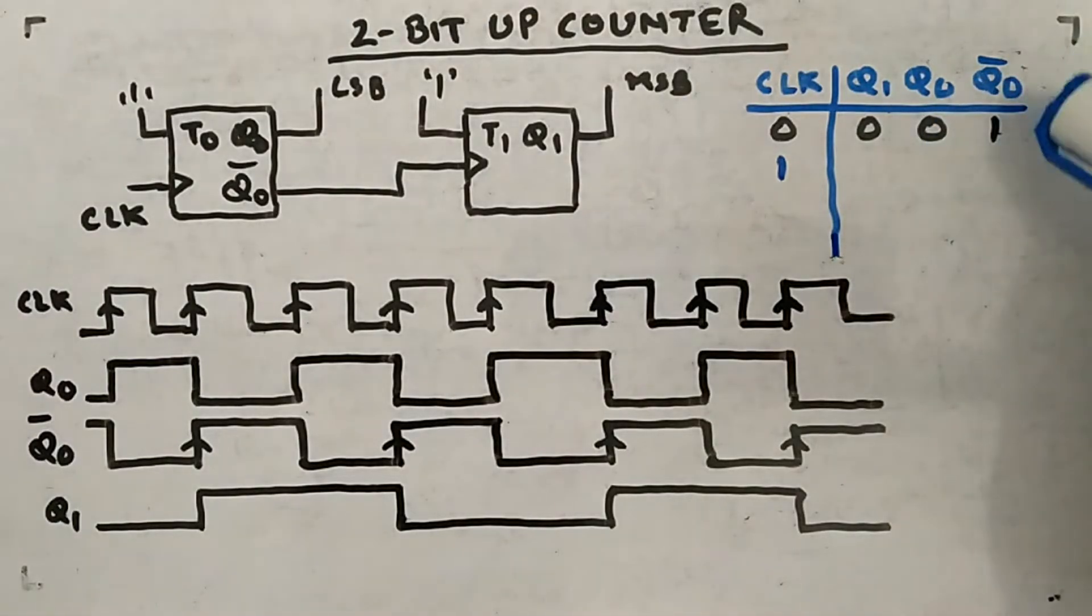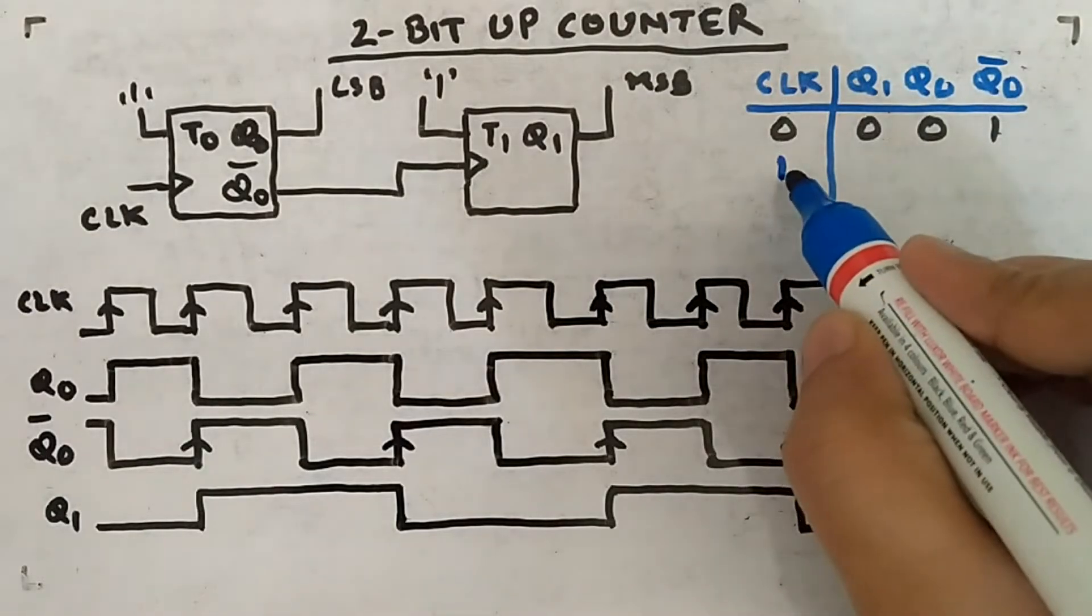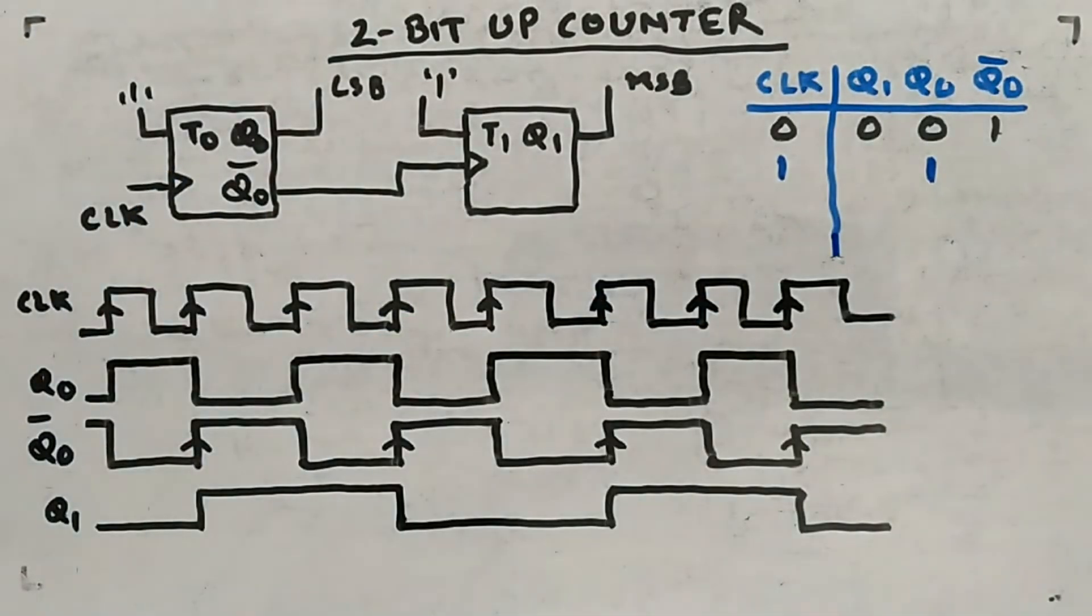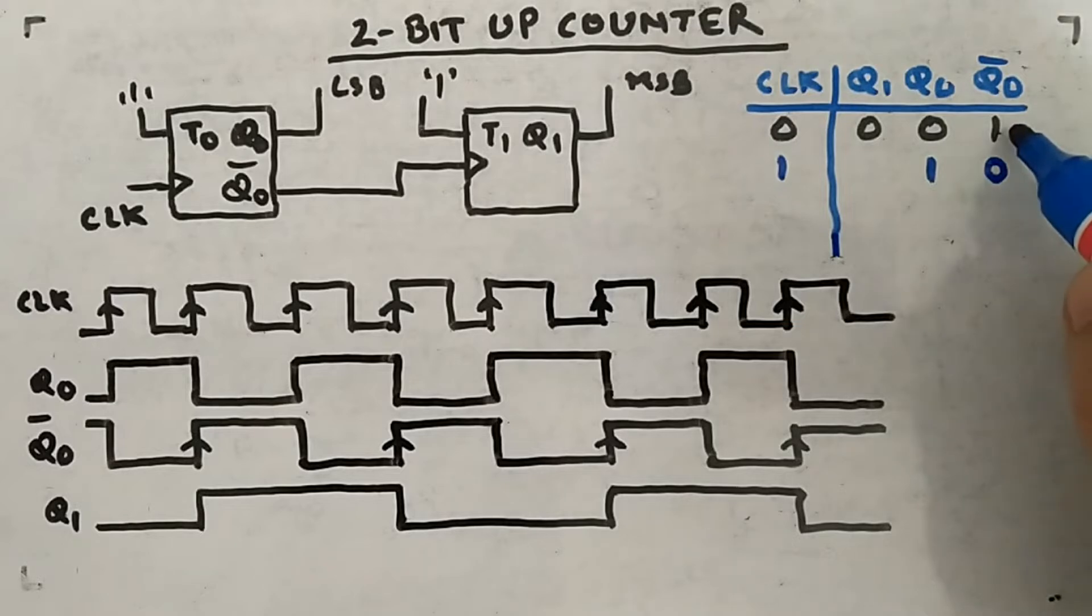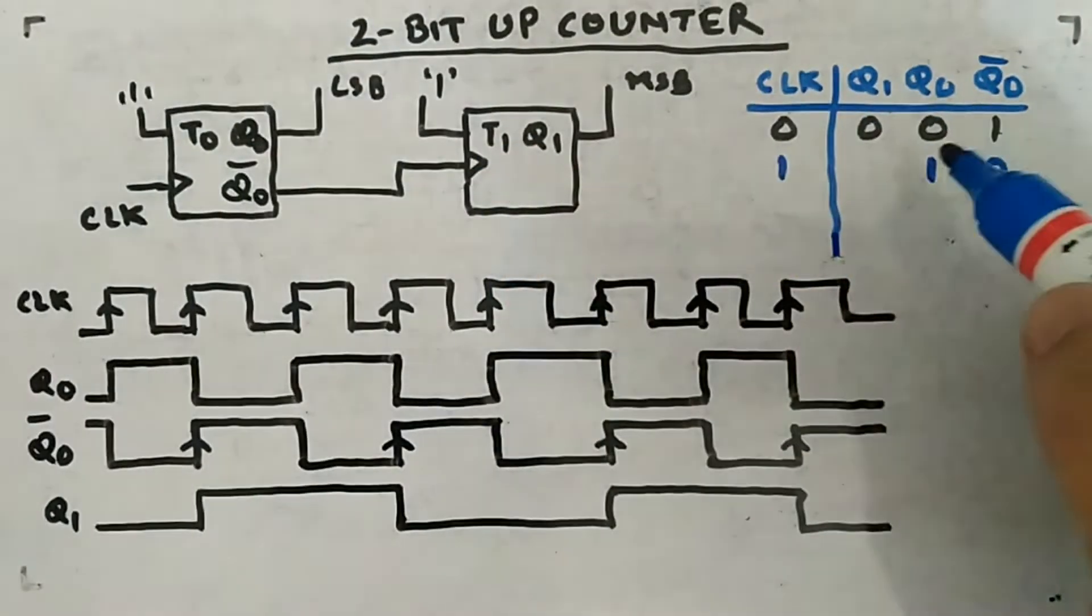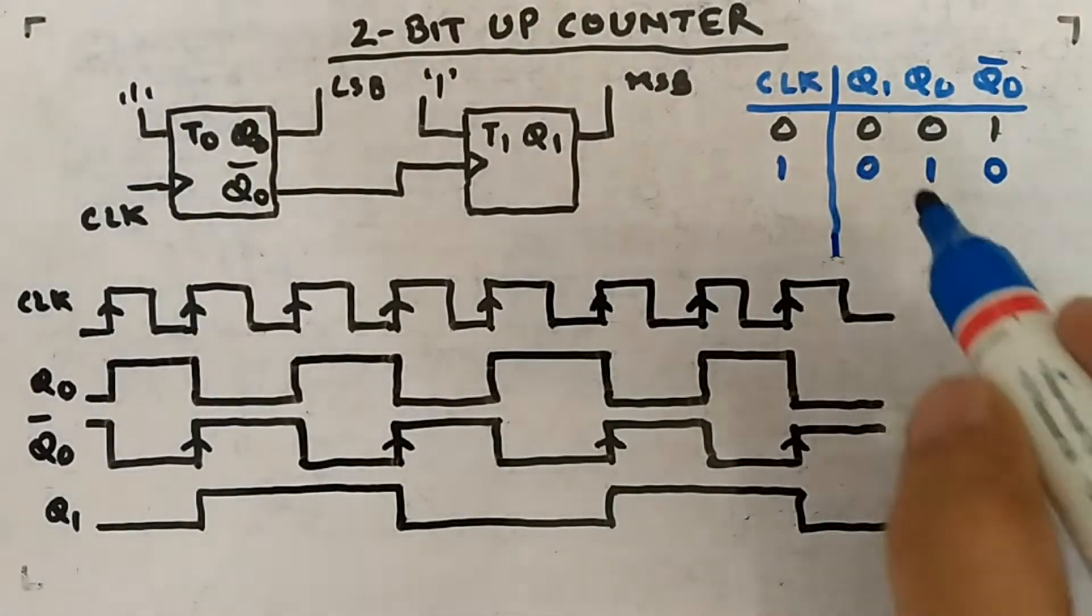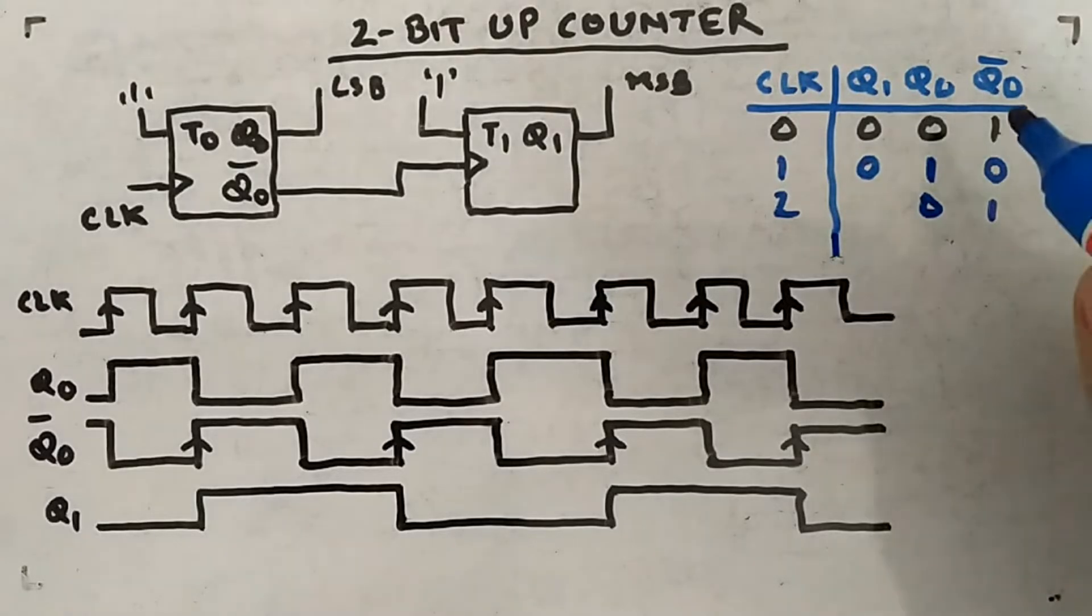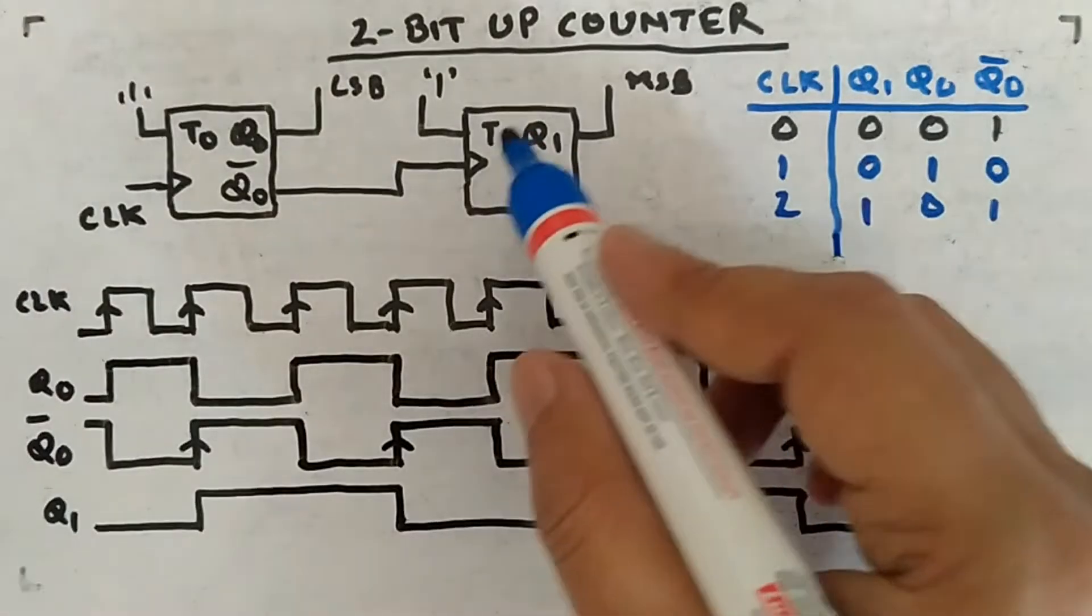When the 0th clock is there, initial state of Q1 and Q0 was 00. Since Q0 is 0, Q0 bar will be 1. When first clock pulse comes, this guy will change its value since it is connected to this and it will toggle. Since this is 1, this will be 0. You can see Q0 bar is coming from 1 to 0, means it's a negative edge. Our T1 flip-flop is positive edge triggered, so there won't be any change in the state.